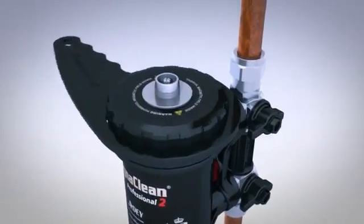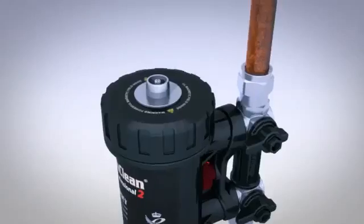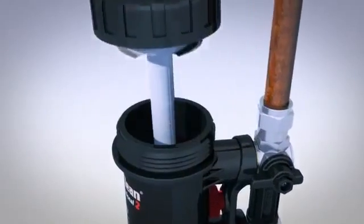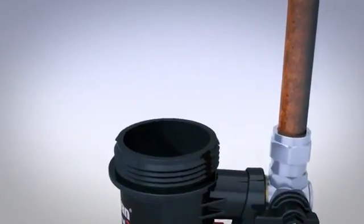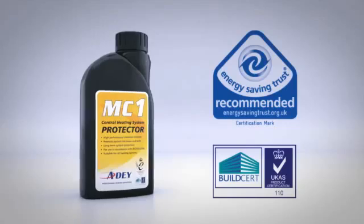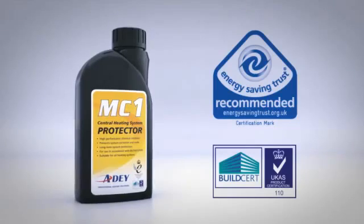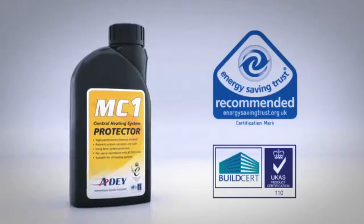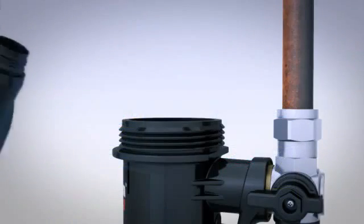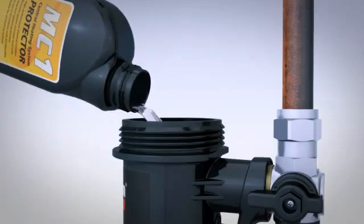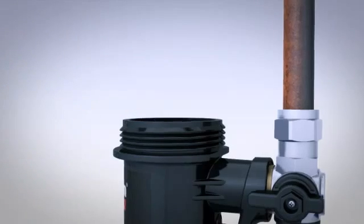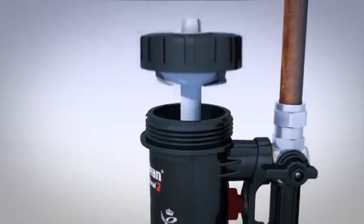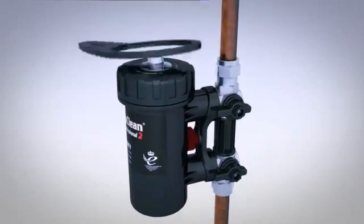Using the spanner provided, unscrew the canister lid and remove the magnetic and non-magnetic capture assembly. To further protect the system, chemical dosing with MC1 protector is recommended. Use the MagnaClean canister as a dosing vessel to add the inhibitor. Replace the lid assembly and secure with the spanner.